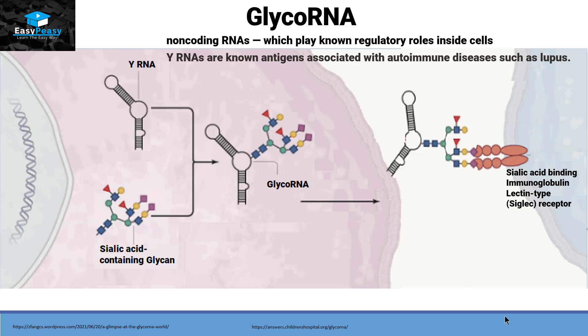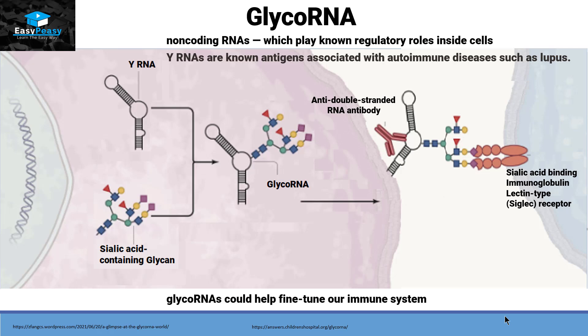So when this glycoRNA was recognized by Siglec receptors, as a result, it helps in the production of anti-double-strand RNA antibodies. There is a chance that glycoRNAs could help fine-tune our immune system.